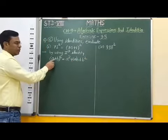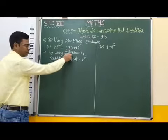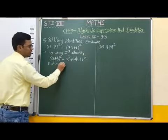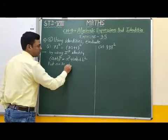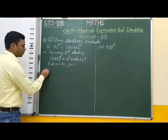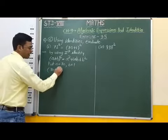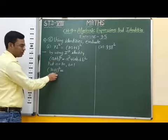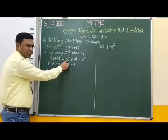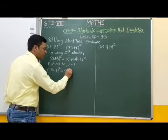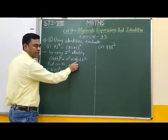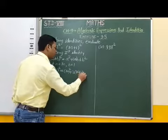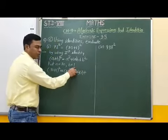We put a equal to 70 and b equal to 1. Therefore, 70 plus 1, whole bracket squared is equal to: in place of a we write 70, so 70 squared; in place of a is 70 and b is 1, so plus 2 into 70 into 1; and b squared, therefore 1 squared.